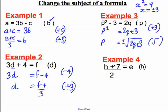Last example. H plus 7 over 2 equals E. I want to make H the subject. Currently, H plus 7 is dividing by 2. I could undo this by multiplying both sides by 2. On the left-hand side, I would simply get an H plus 7. And on the right-hand side, I would get 2E.